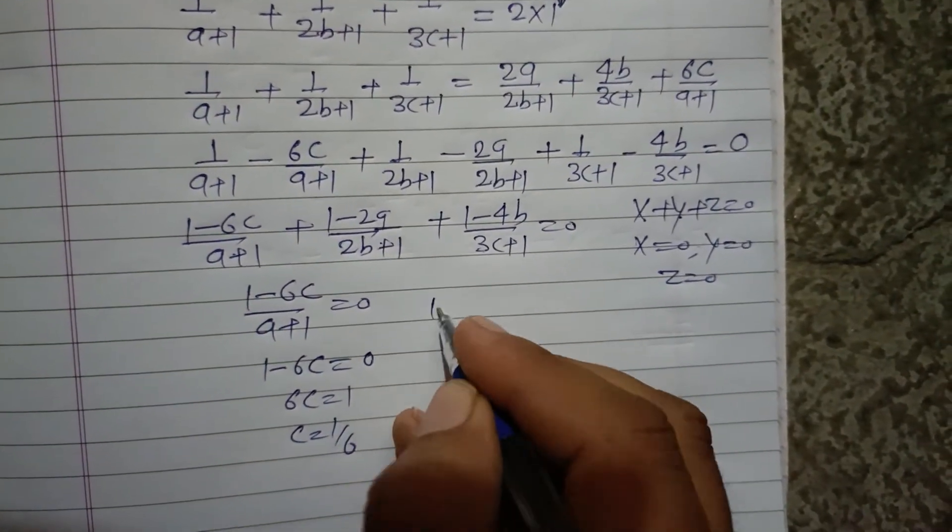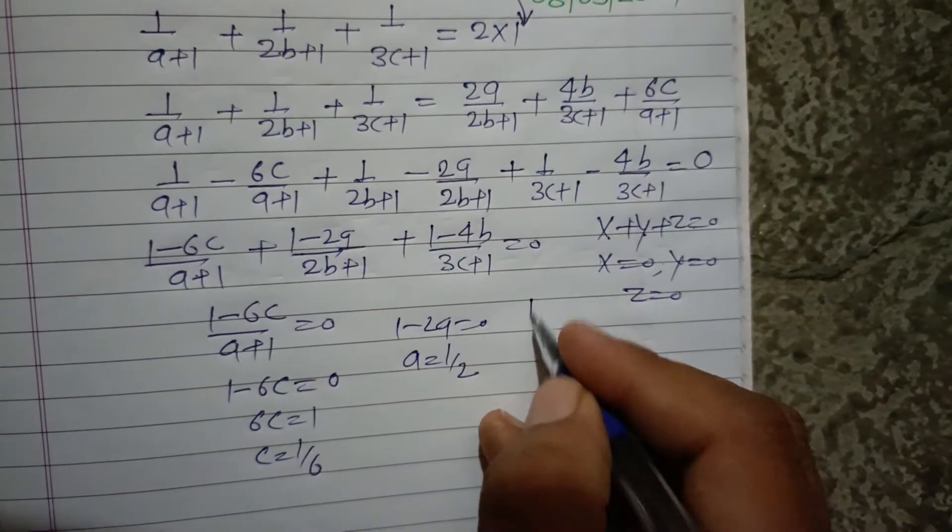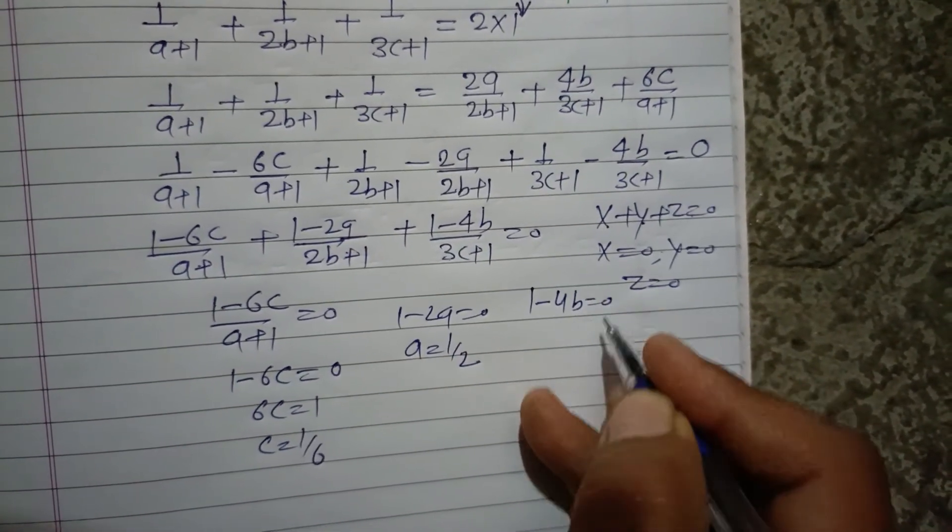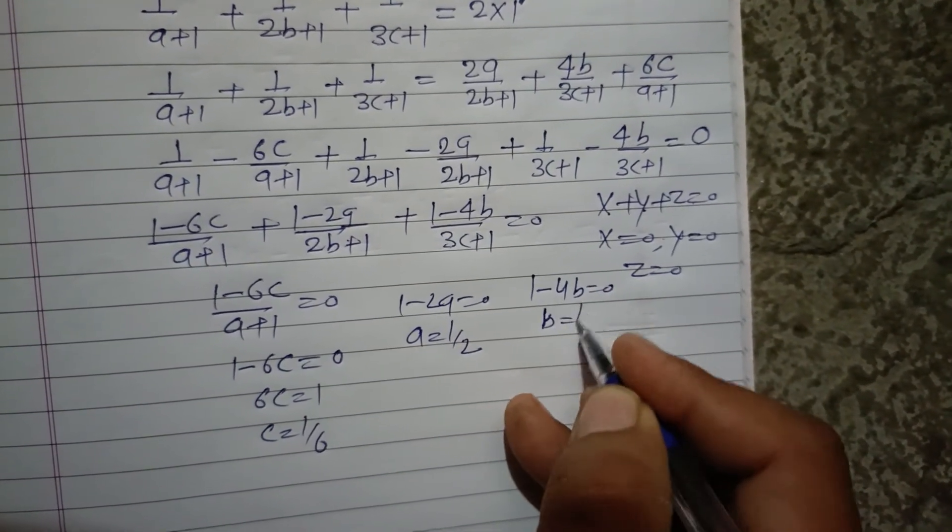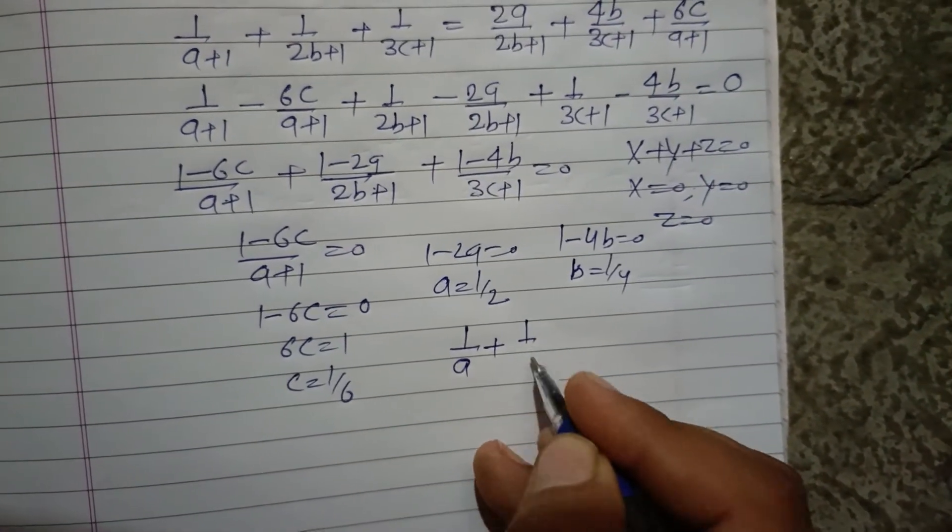Similarly we get 1 minus 2a equal to 0, a equal to 1 by 2. Similarly we get 1 minus 4b equal to 0, and b equal to 1 by 4.